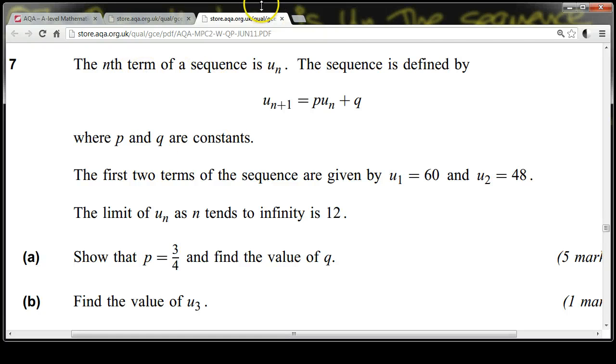The nth term of a sequence is un. The sequence is defined by un+1 equals pun plus q, where p and q are constants. The first two terms of the sequence are given by u1 equals 60 and u2 equals 48. The limit of un as n tends to infinity is 12. Show that p equals 3/4 and find the value of q.